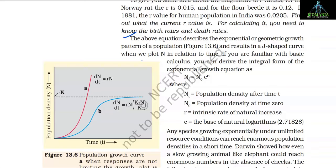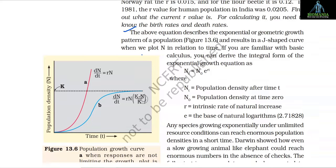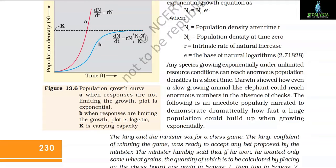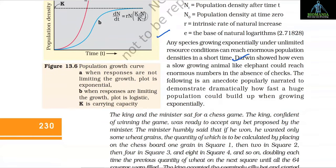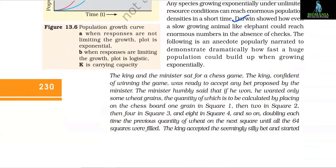This equation describes the exponential or geometric growth pattern of a population and results in a J-shaped curve when we plot N in relation to time. The integral form of the exponential growth equation is: N(t) = N₀ × e^(rt), where N(t) is population density after time t, N₀ is population density at time zero, r is the intrinsic rate of natural increase, and e is the base of natural logarithms (2.71828). Any species growing exponentially under unlimited resource conditions can reach enormous population densities in a short time.